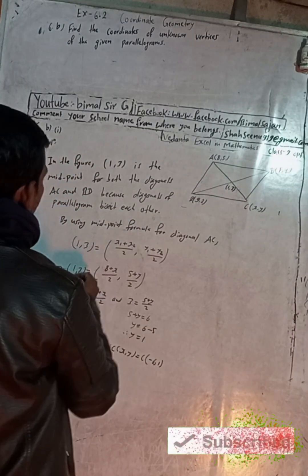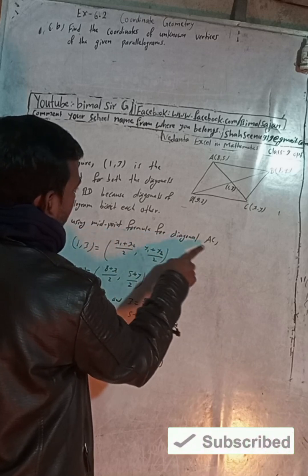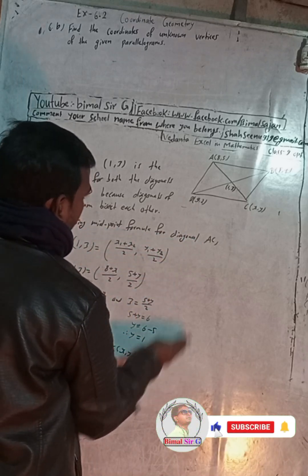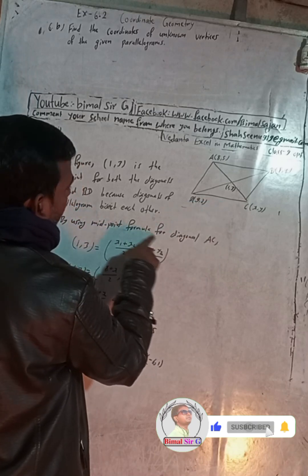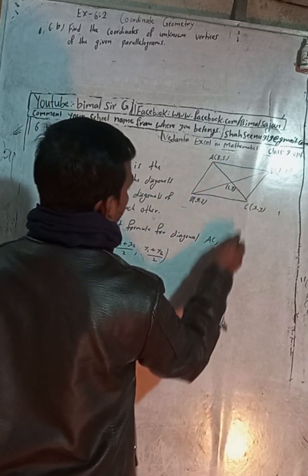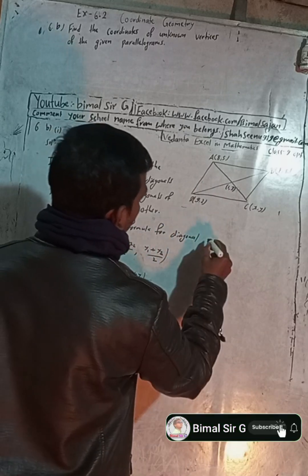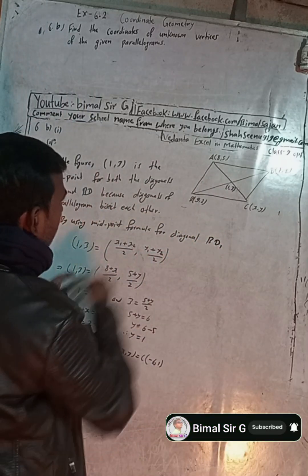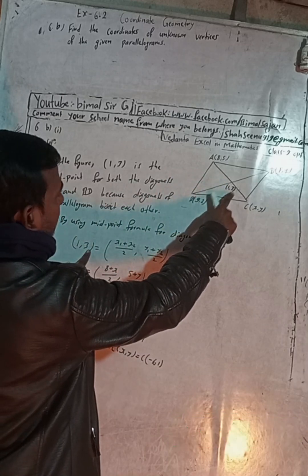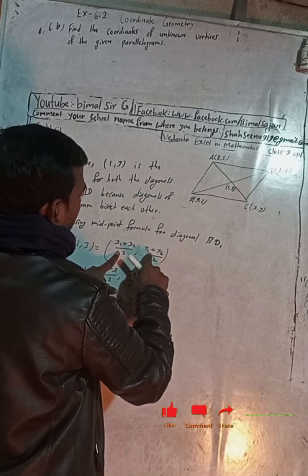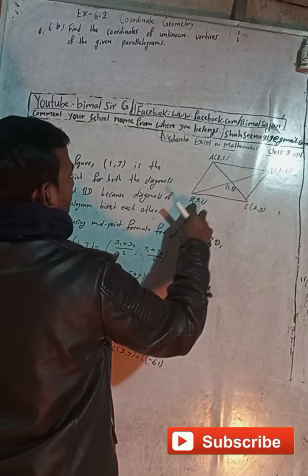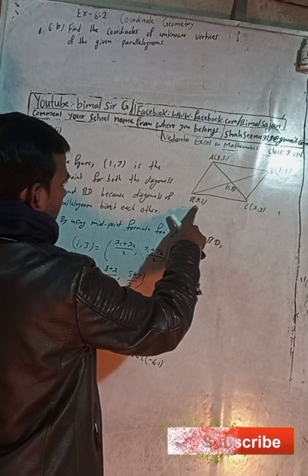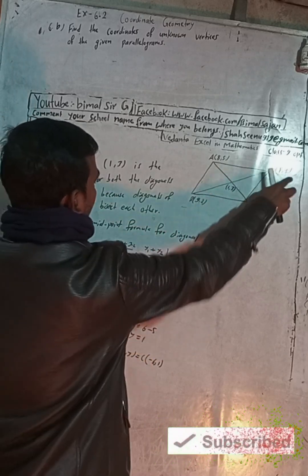In the same way, we will now apply the midpoint formula for diagonal BD. The midpoint is still (1, 3). Using the same formula x1 plus x2 by 2 comma y1 plus y2 by 2, we can suppose B has coordinates x1 and y1, and D has coordinates x2 and y2.